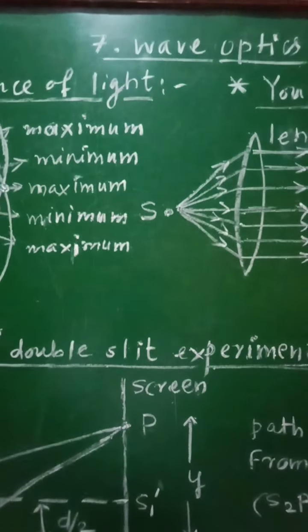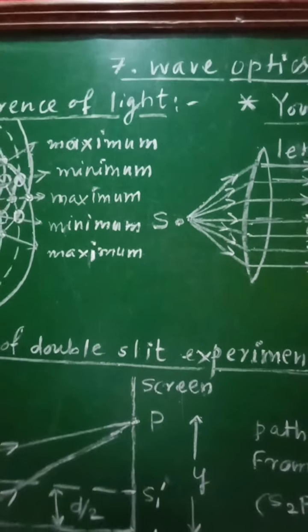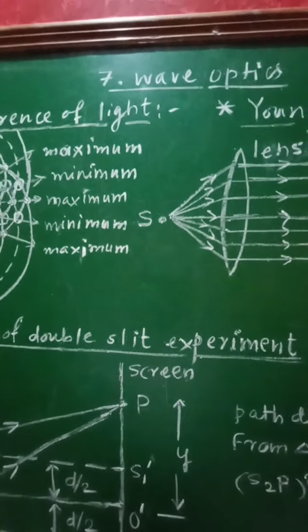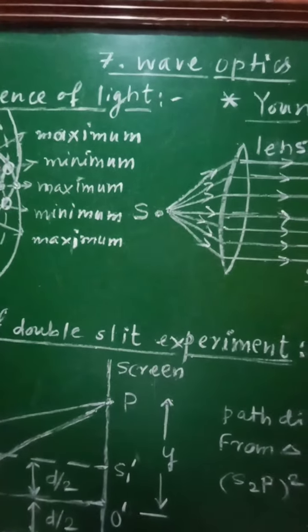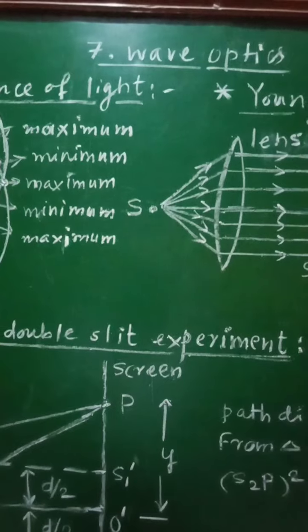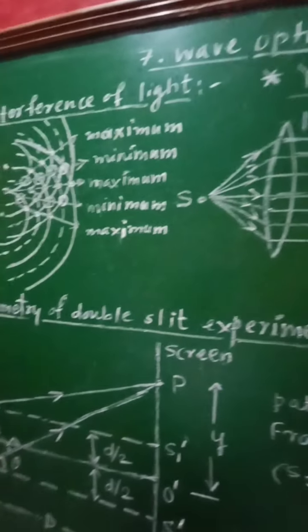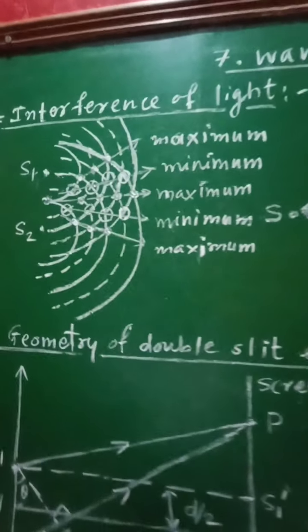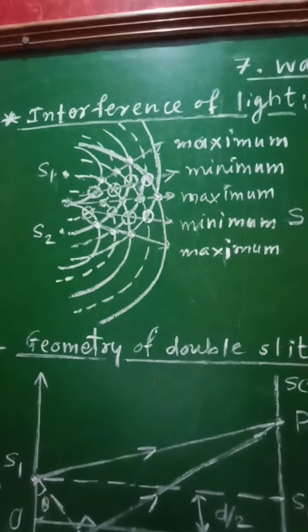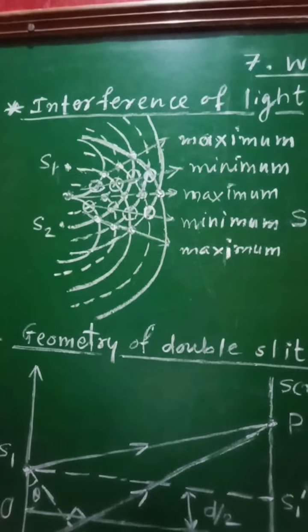Class 12th, Subject Physics, 7th chapter, Wave Optics. From this chapter, Interference of Light.